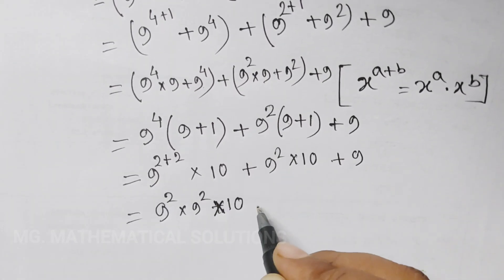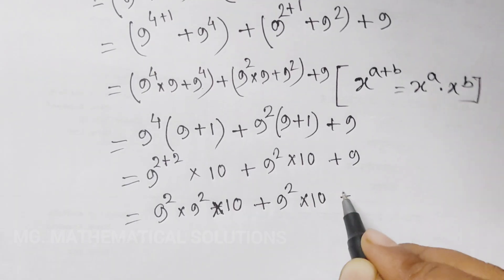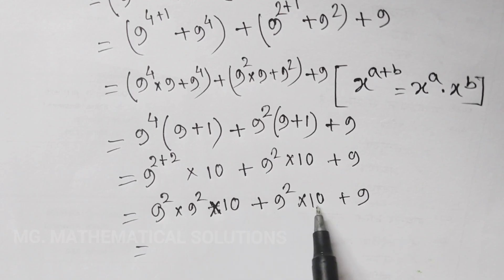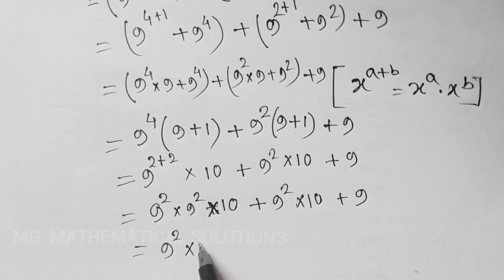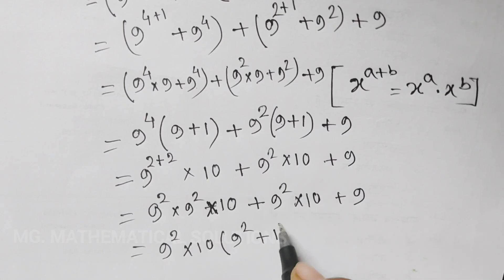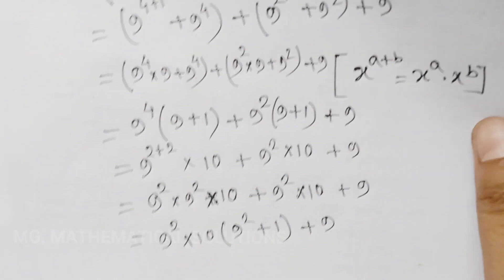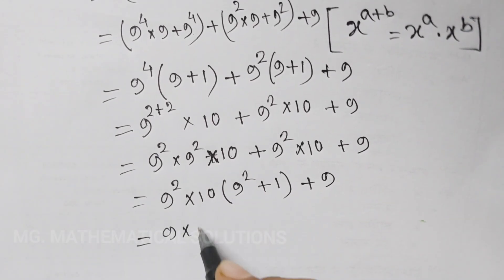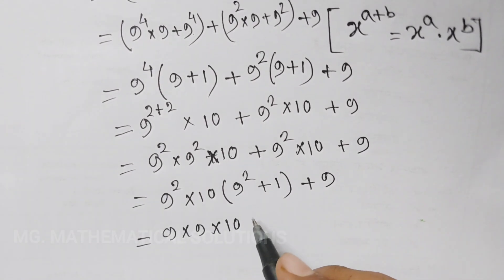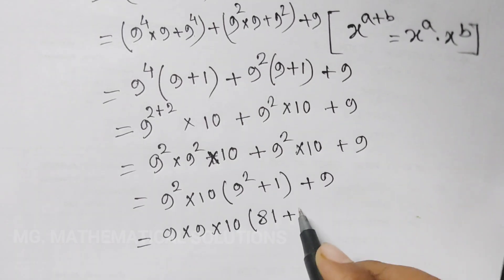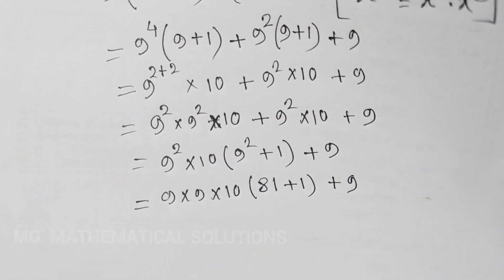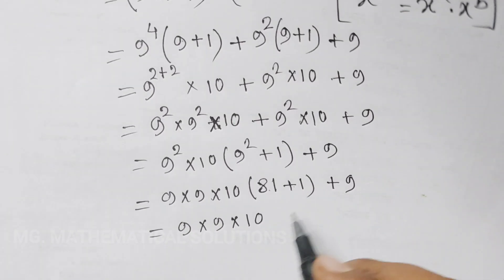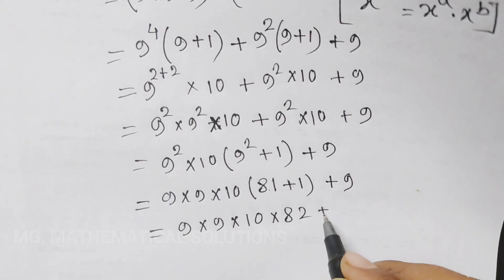We use the same formula again. We get 9 squared into (9 squared plus 10), plus 9 squared into 10, plus 9. We take 9 squared into 10 common. That gives us 9 squared into 10 into (9 squared plus 1) plus 9. Equal to. We can write this as 9 into 9 into 10, and 9 squared means 81, so 81 plus 1 equals 82.